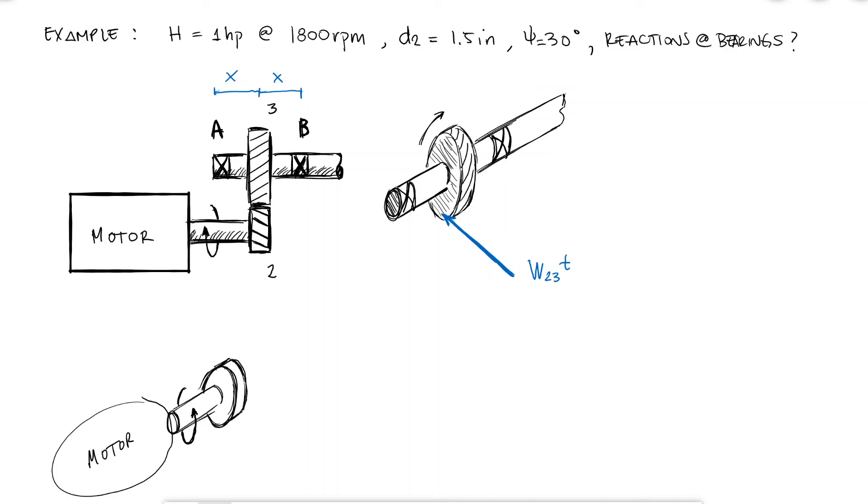The torque that the motor is producing to be transferred by gear 2 would be found just like we've done before with 1 horsepower being 550 foot-pounds per second and multiplying by 12 to get that torque in pound inches instead of pound feet. If we divide this torque by the radius of gear 2.